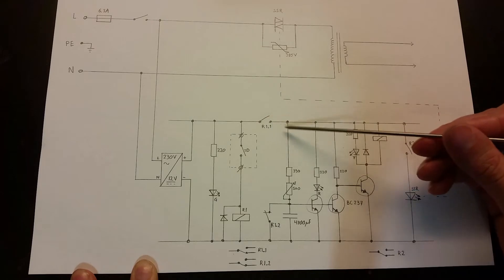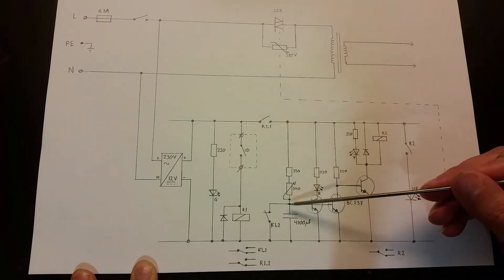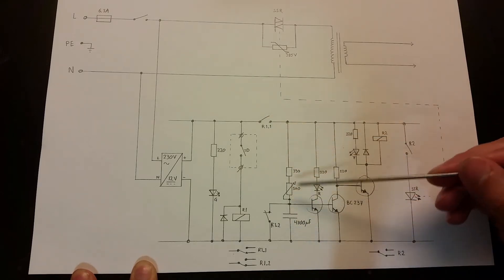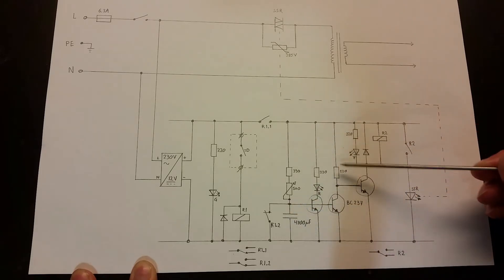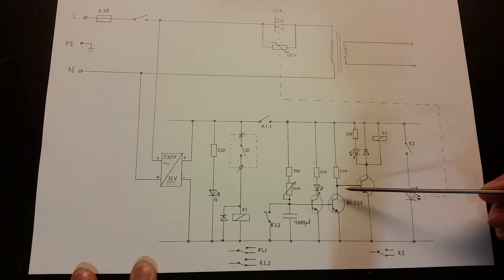So when this unit is turned on, current will flow here through these resistors and charge the capacitor here. While that one is charging, current will flow through this resistor here, 220 ohms, to this transistor which turns this relay on. This is R2, and R2 will turn the solid state relay on.